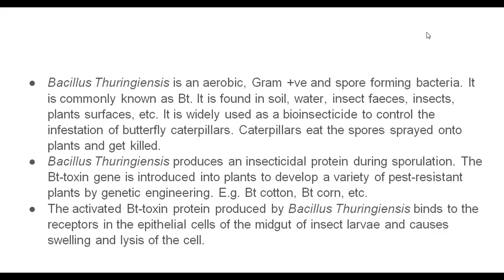Bacillus thuringiensis is found in soil, water, insect feces, and insect plant surfaces. This is how we incorporate it into plants as an insecticide.